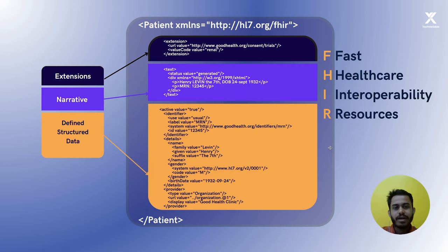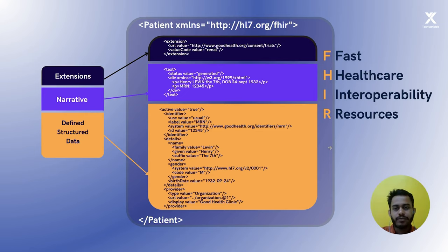Now let's talk about FHIR. FHIR was started in 2011 and was implemented by HL7, a non-profit organization that builds healthcare standards. There are many standards built by HL7. FHIR is all about resources. You can find many resources in HL7 FHIR, and FHIR also has versions like R4 and R5.